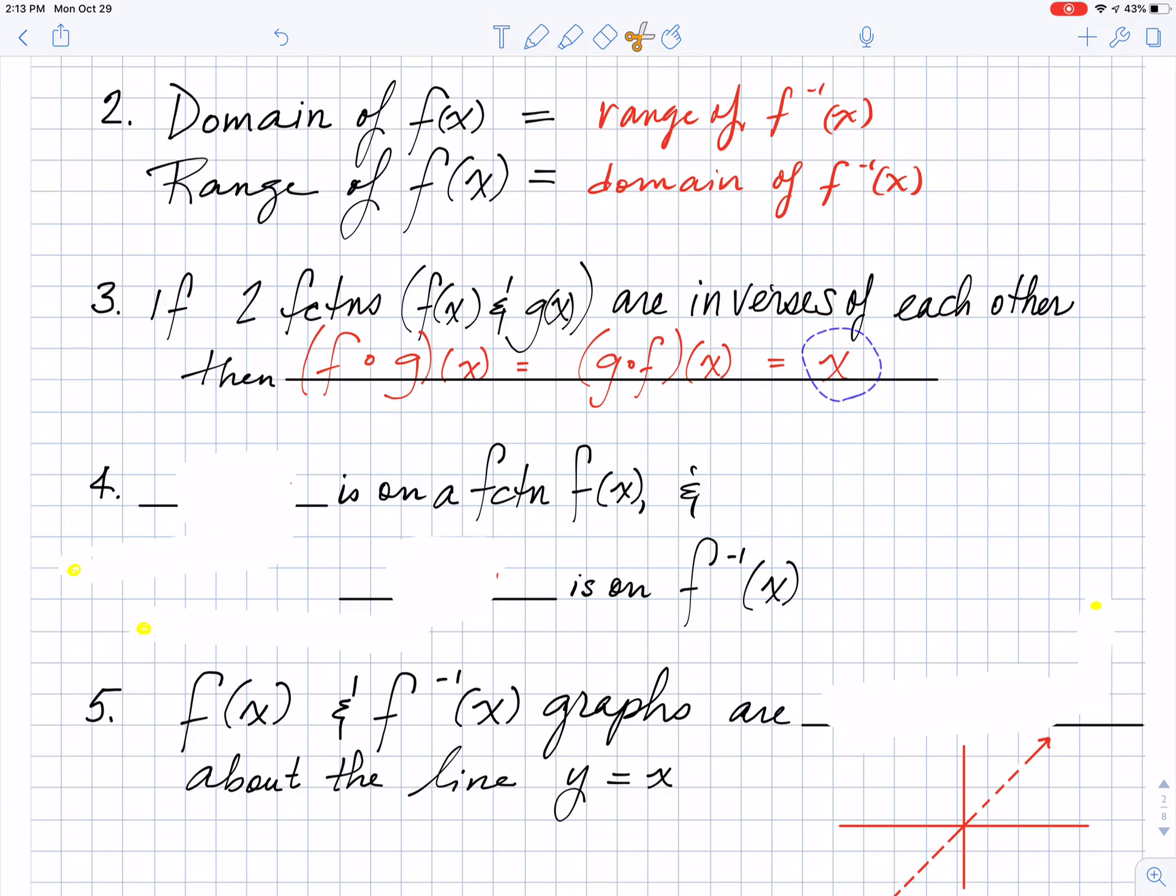Interesting fact number four. If you have the coordinate (x, y), and it is on your original function f of x, then what you are going to find is that the coordinate (y, x) will be on your inverse function. This actually goes back to interesting fact number two. Remember that domain is an x value and range is a y value.